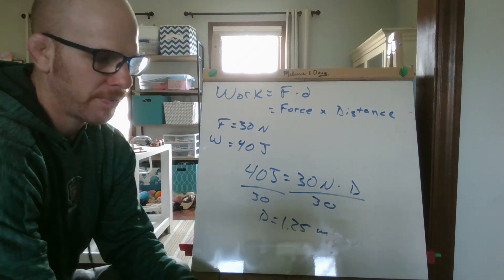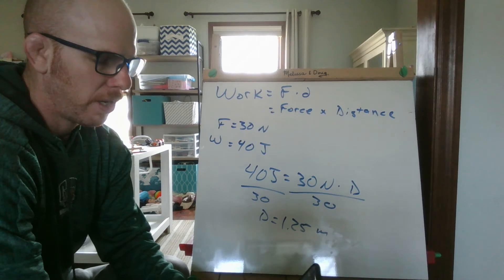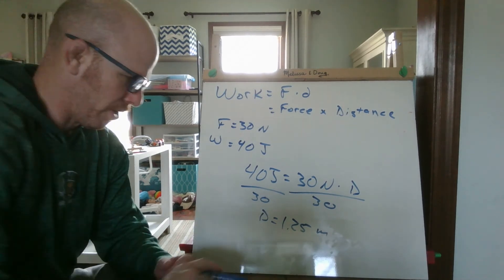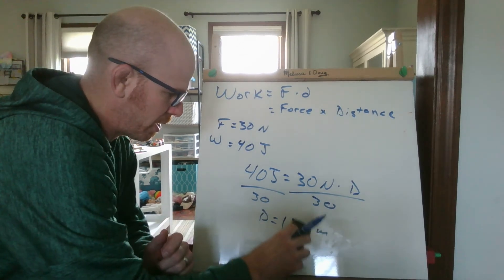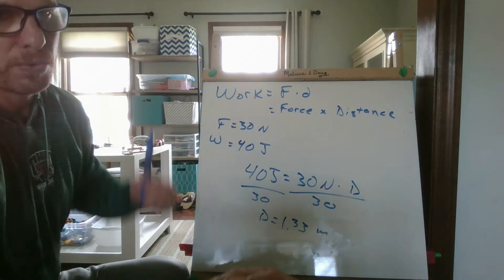I should probably check that, huh? So 40 divided by 30. Oh, excuse me, 1.33 meters. 1.33 meters would be the distance if I knew that this was the work and this was the force that we used.